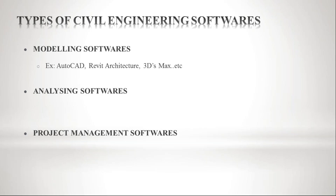Let us see what modeling software is — the tools which are used for the modeling of a structure. This includes modeling the elevation part and the interior part. We exclusively work on the outlook, meaning the aesthetic appearance of the structure. Examples include AutoCAD, Revit, and SketchUp. These are the basic softwares which come under this modeling category.